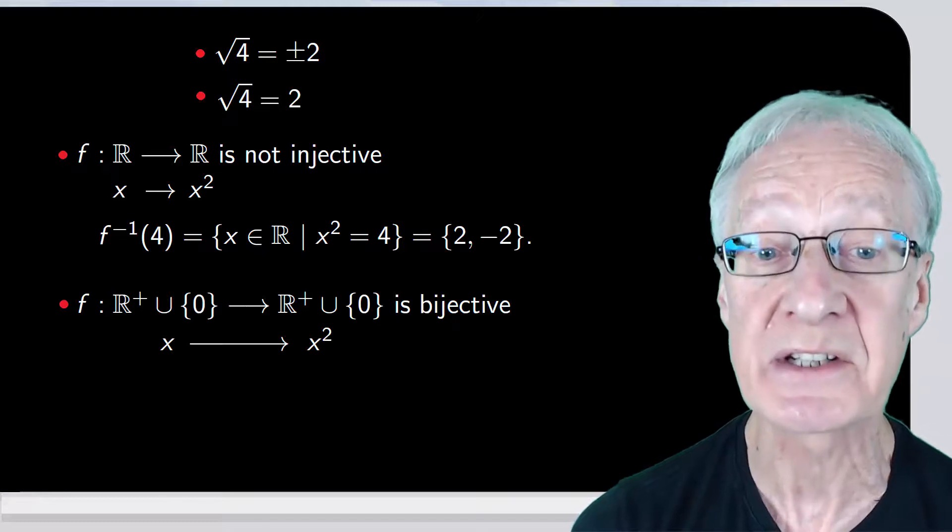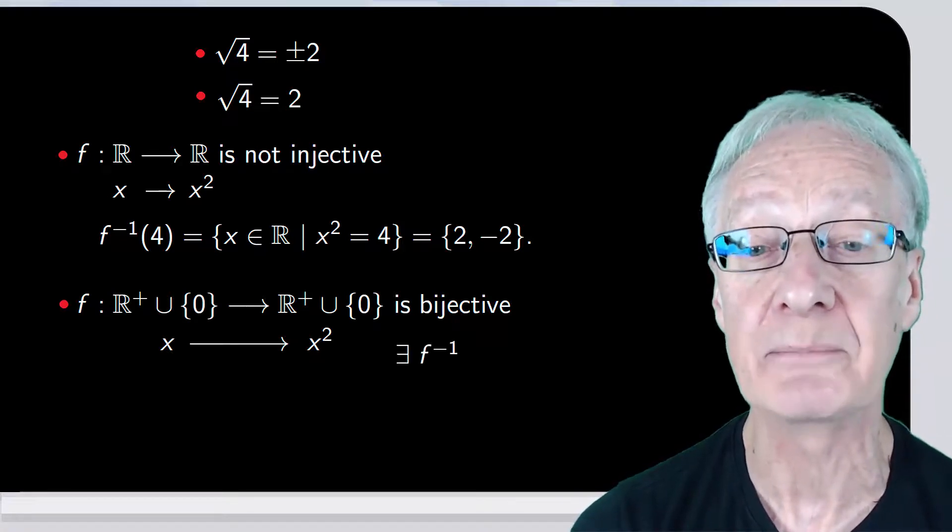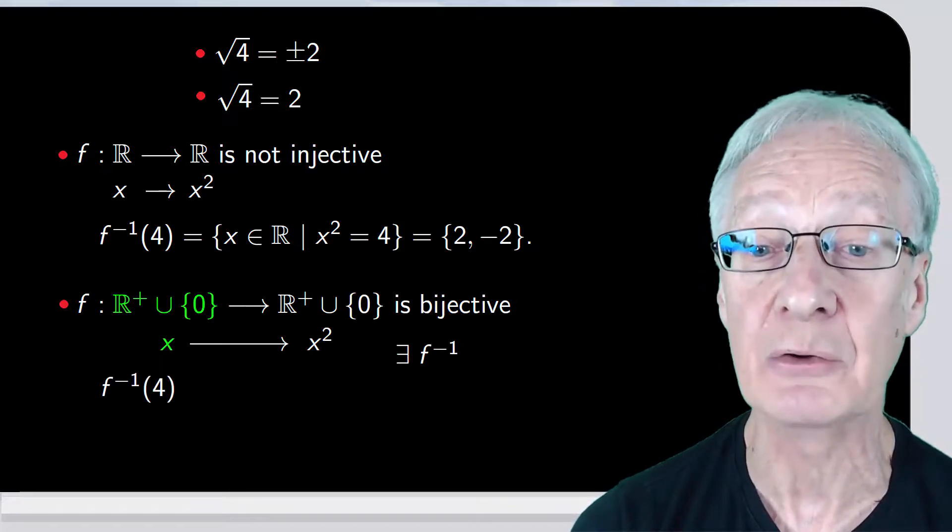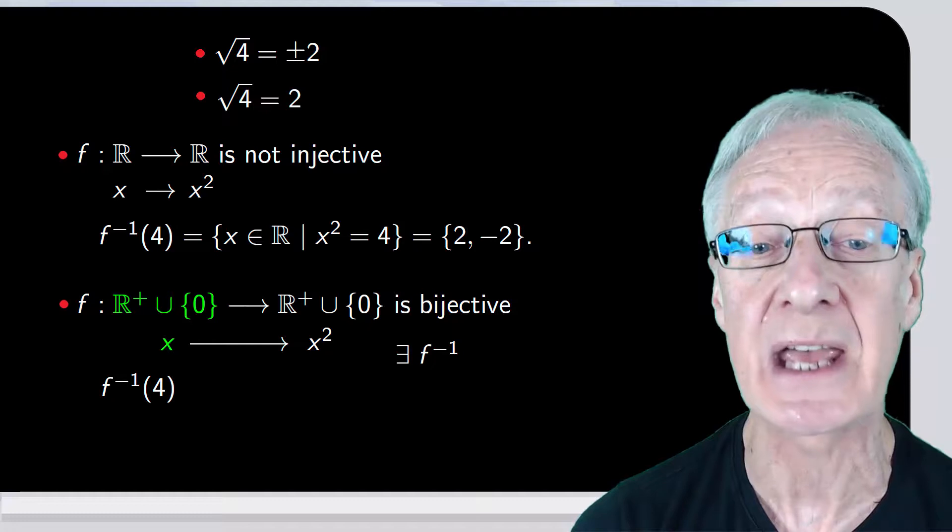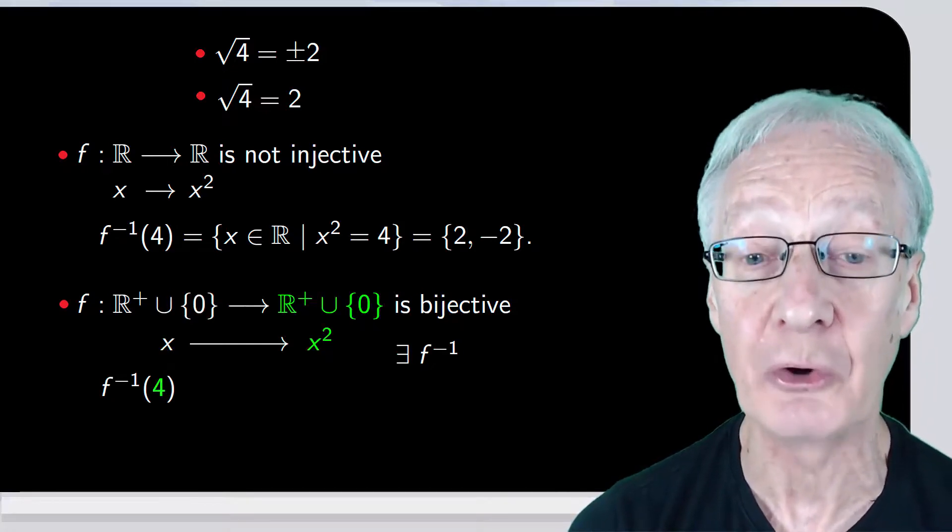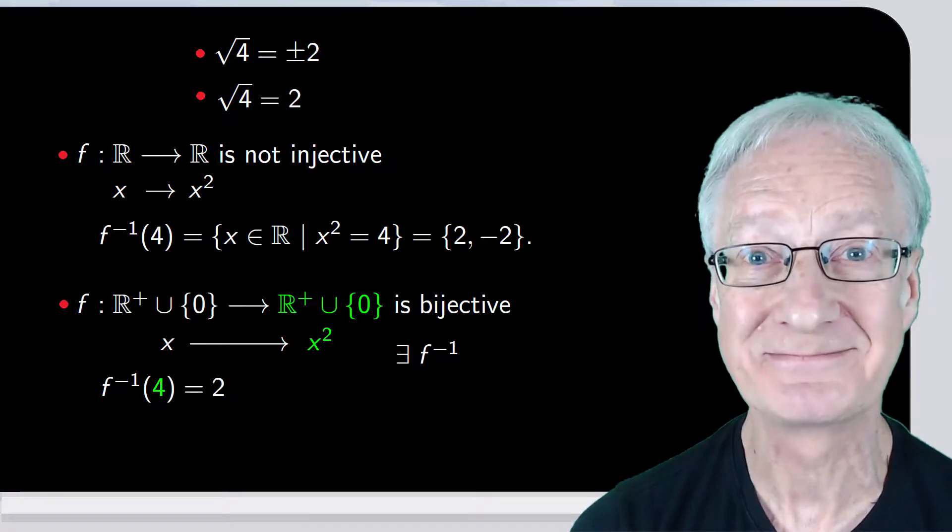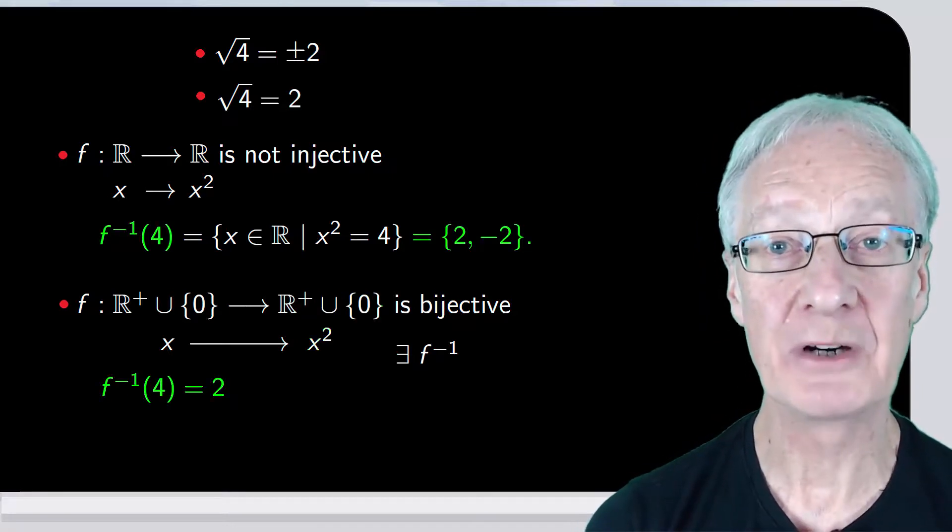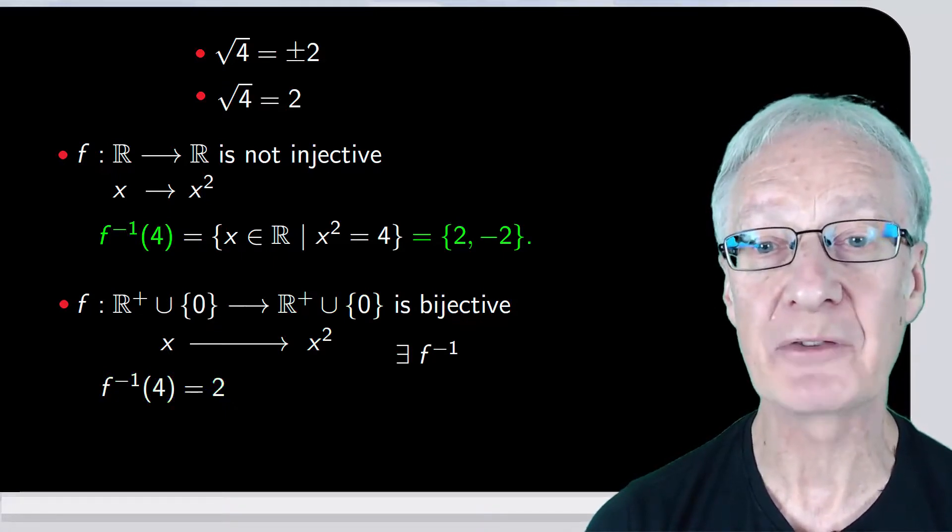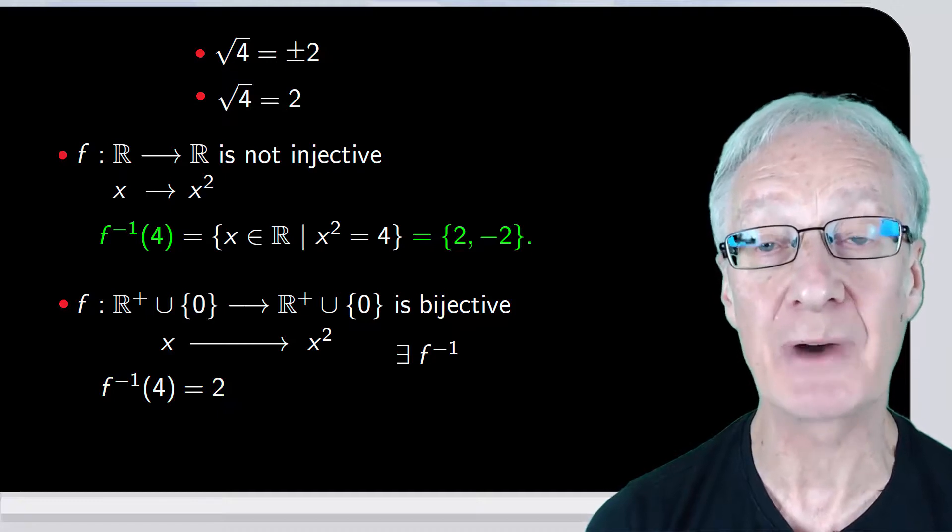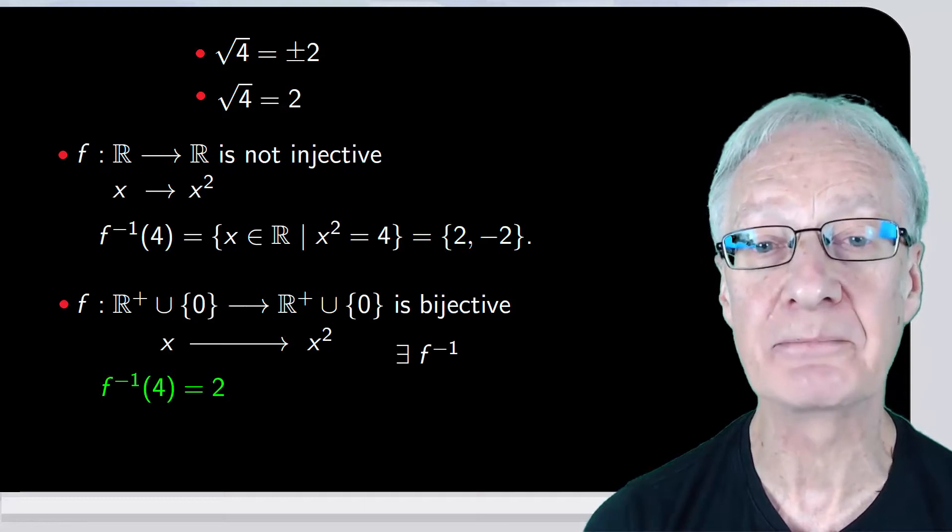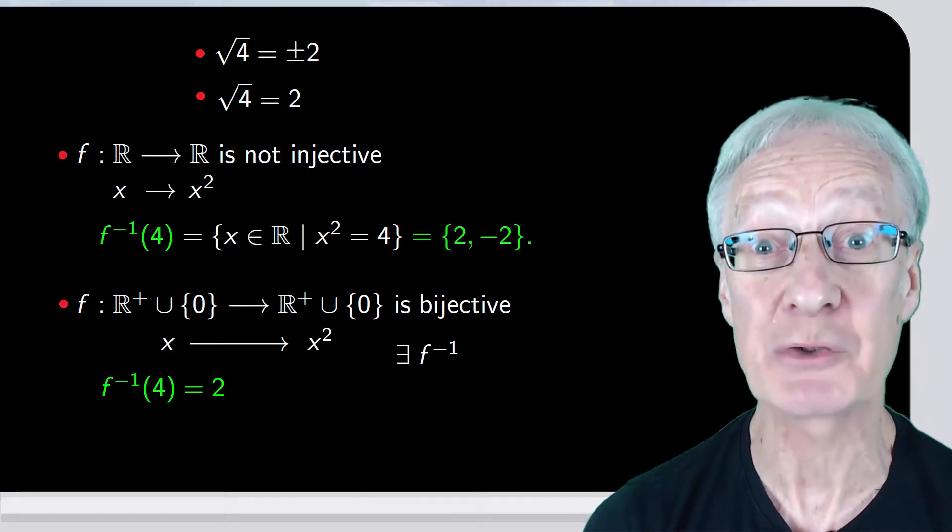This new function f is bijective, and therefore we can consider the inverse f minus 1. And note that in this case, f minus 1 of 4 is that value of r plus union empty set, such that when we square it, we can give as a result 4. And of course, it's just 2. Both above and below with the inverse, we're referring to the square root. Above, we have that the result is a set 2 and minus 2. Below, we obtain only the value 2. As before, everything depends on the context in which we work.